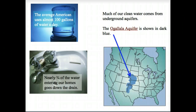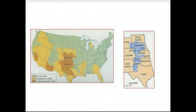Most of our clean water comes from underground aquifers. While normally free of pollutants, groundwaters can be contaminated by a number of sources, such as abandoned mines, poorly constructed landfills and septic systems, and household chemicals poured down the drain or onto the ground.